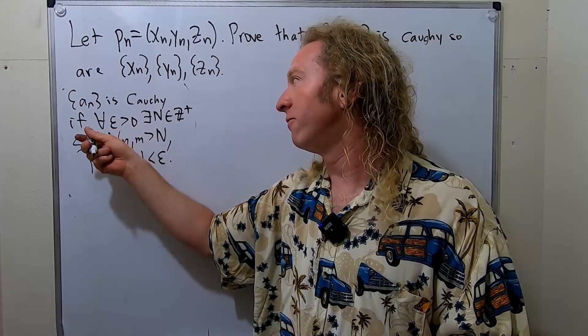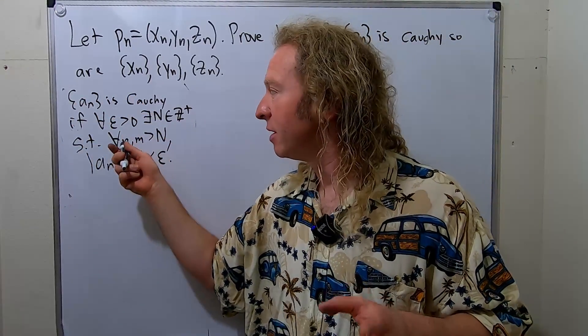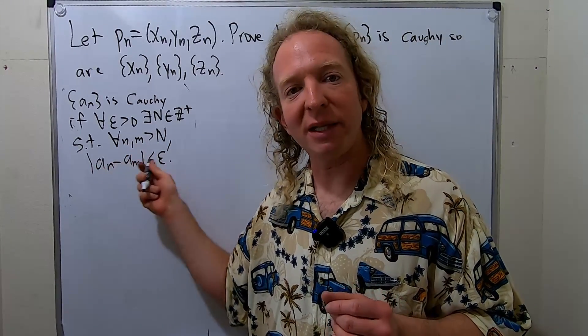So a sequence a sub n is Cauchy if for every epsilon greater than 0, we can find a positive integer N such that for all little n and little m bigger than capital N, the distance between them can be made less than epsilon.